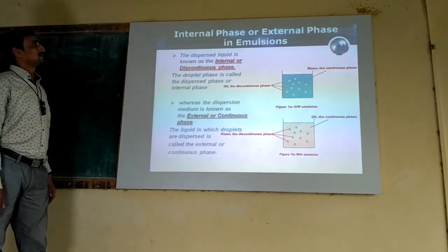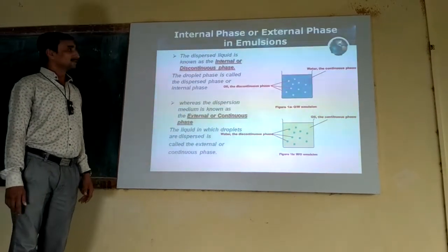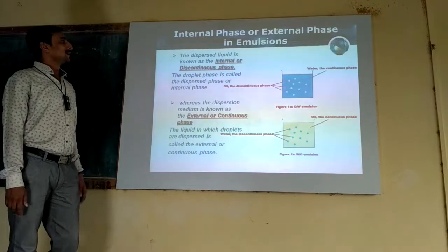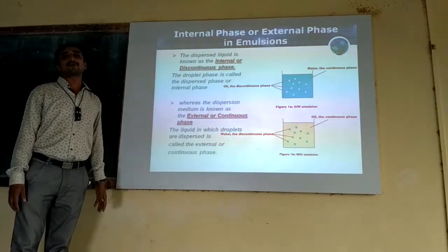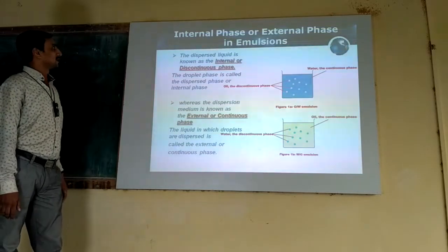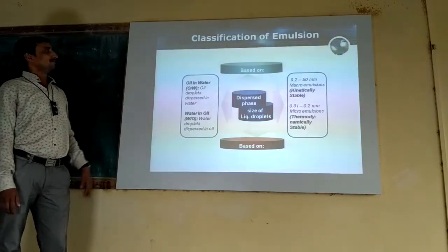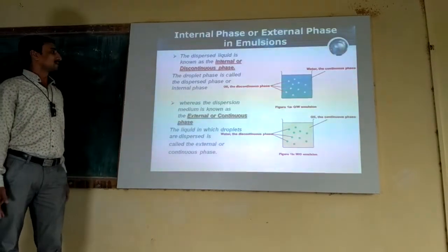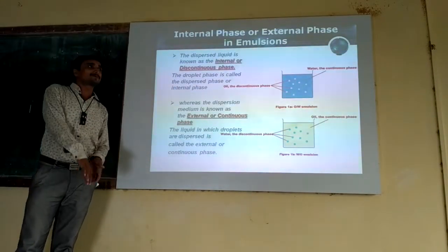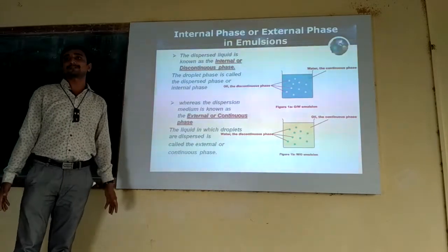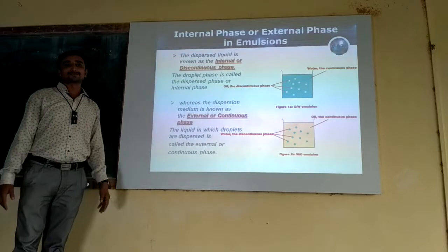Regarding the internal phase and external phase of an emulsion: in an emulsion, one phase is dispersed into another. The dispersed phase is called the internal phase, also known as the discontinuous phase. The phase into which dispersion occurs is called the continuous phase or dispersion medium, also known as the external phase.